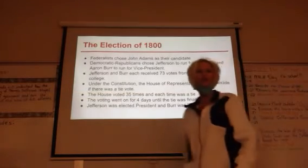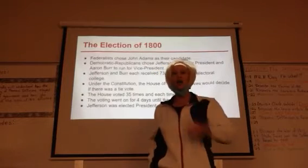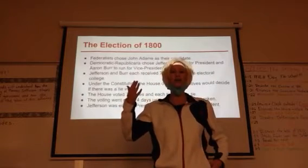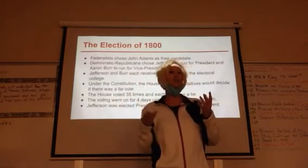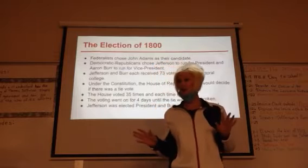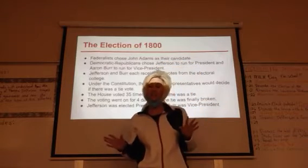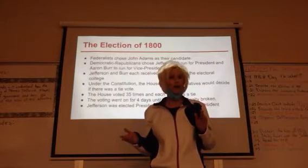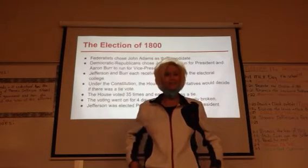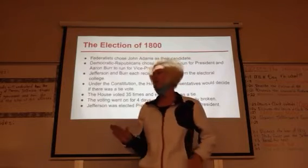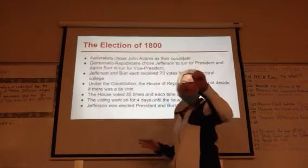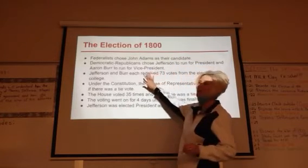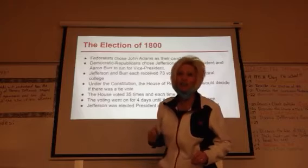In the Election of 1800, in a two-party system, the Federalist Party ran John Adams as president — he had been president for the past four years. He had a few issues with his political party and did not have a smooth presidency. The Democratic-Republican Party nominated Thomas Jefferson for president and Aaron Burr for vice president.